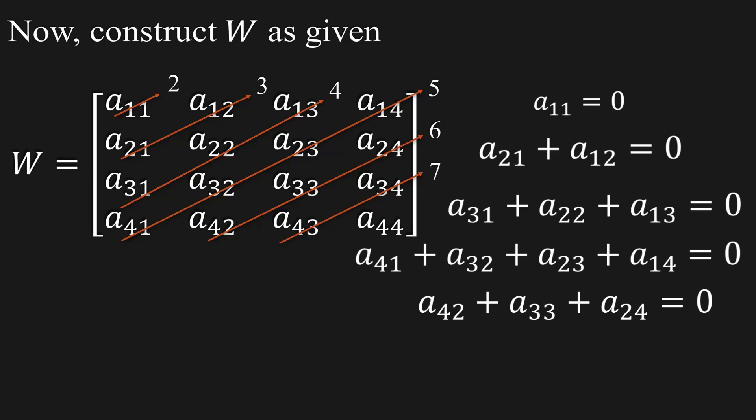The sum of indices along the arrow is 7. According to the given condition, we have a43 + a34 = 0. The sum of indices along the arrow is 8. According to the given condition, we have a44 = 0.